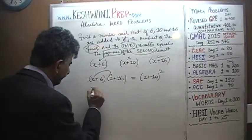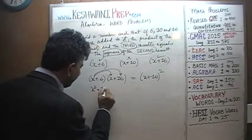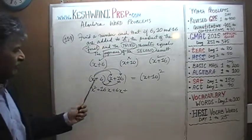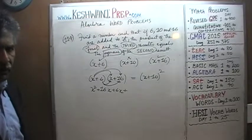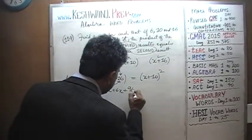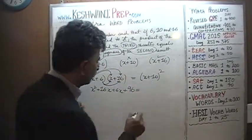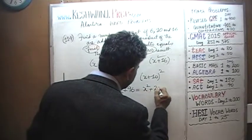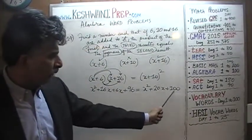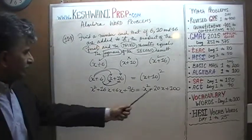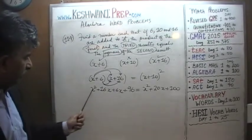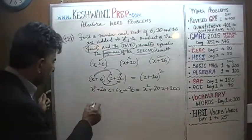Expanding the left side: x squared plus 16x plus 6x, and 16 times 6 — 16 times 5 is 80, plus another 16 is 96. On the right side, (x+10) squared is x squared plus 20x plus 100, from the identity (a+b)² = a² + 2ab + b². As you can see, it is not a quadratic equation — the x squared terms cancel from both sides.